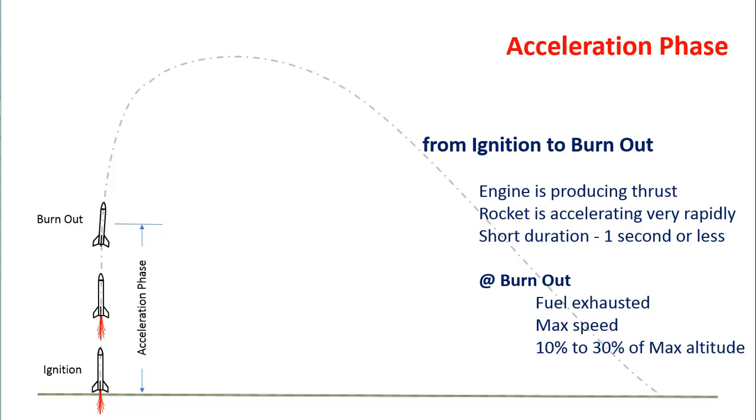When we reach burnout, what that means is all the fuel has been exhausted and the engine is no longer producing any thrust. However, by the time it is at burnout, it has already attained its maximum speed, even though it may only be 10, 20, possibly 30% of its maximum altitude.